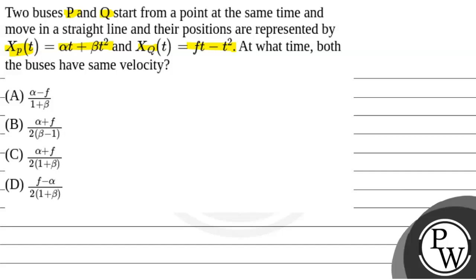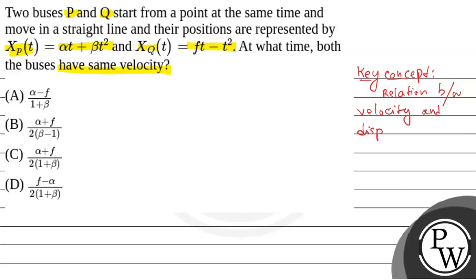So, we have to find at what time both the buses will have the same velocity. The key concept here is the relation between velocity and displacement.